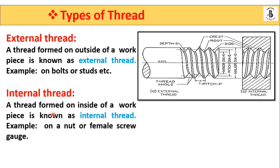The second type is internal threads. In the case of internal threads, they are formed inside the workpiece. They are found on a nut or a female screw. Both types have their own applications, and you can combine external and internal threads to join components as fasteners in machines.